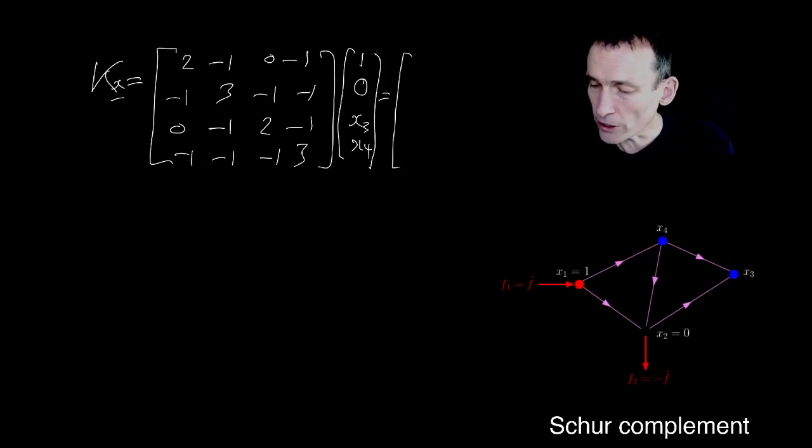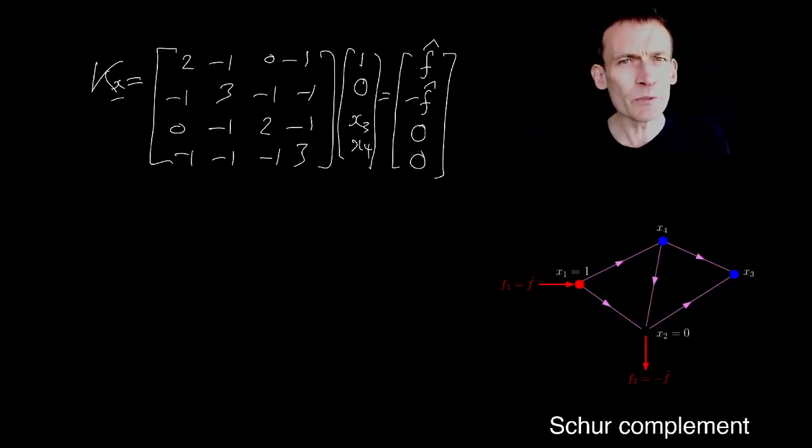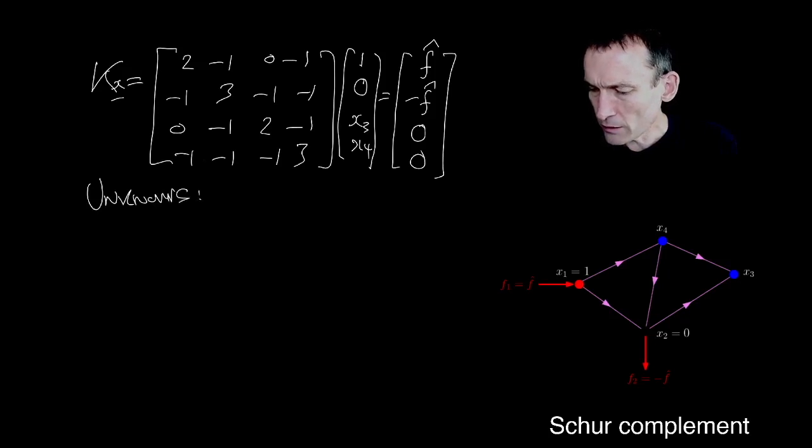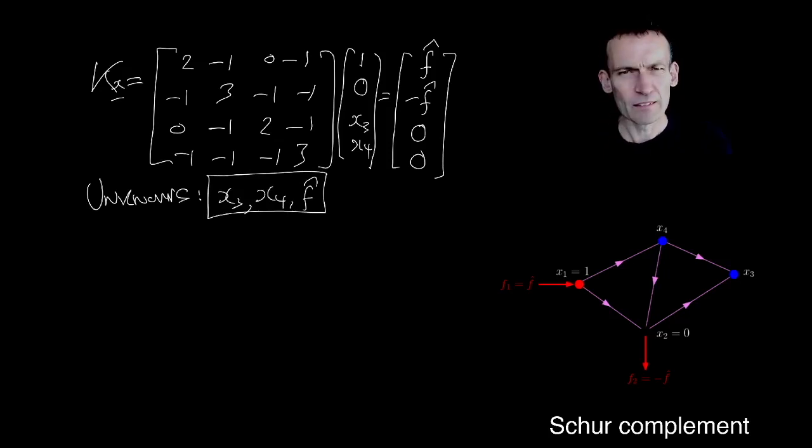And I don't actually know what the divergence at node 1 is. I do know that the divergence at node 2 is minus it. And then I'm having Kirchhoff current law hold at nodes 3 and 4. Remember, that's the whole point of these two point sort of sink problems. Now, the unknowns are x3, x4 and f-hat.